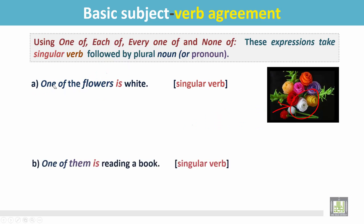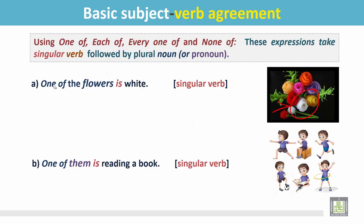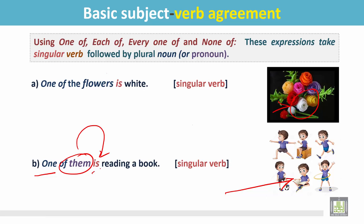Another example: One of them is reading a book. In this picture we see there are many children, but one of them is reading a book. The sentence begins with one. There is a plural pronoun, them, but this plural pronoun is followed by a singular verb, is.